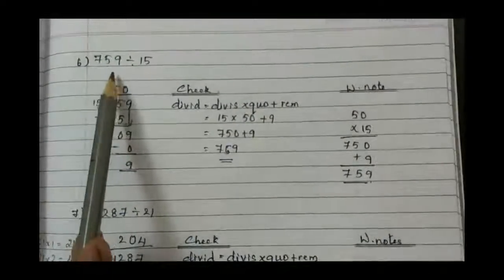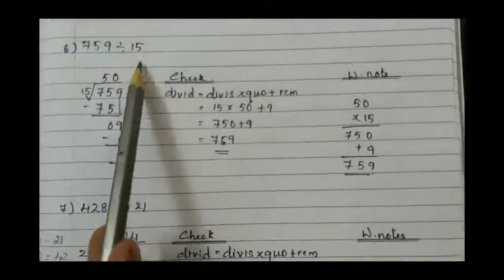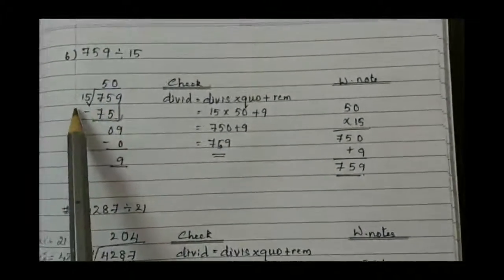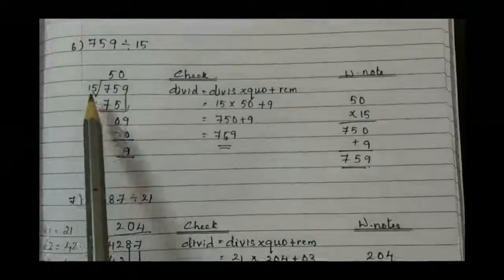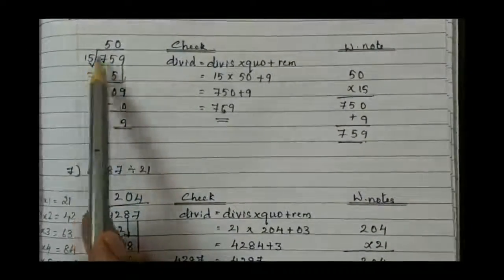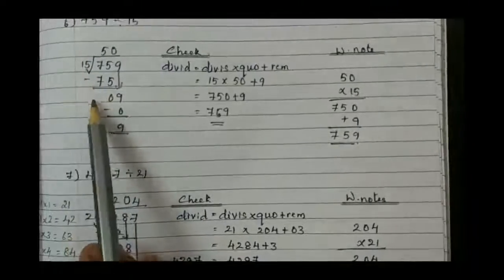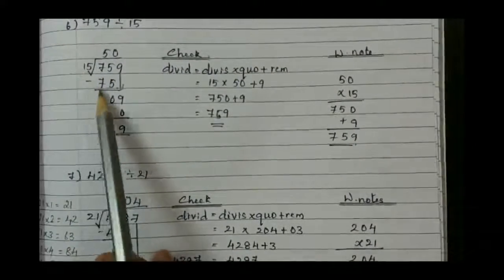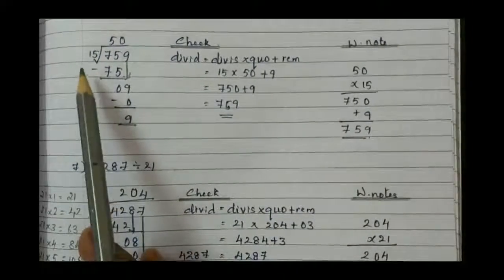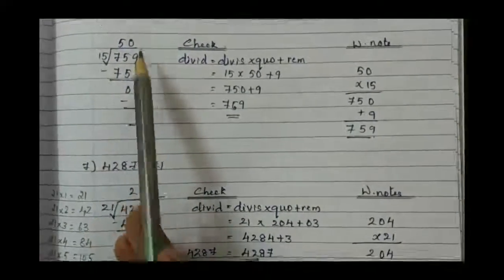Question number 6: 759 divided by 15. We are going to divide 759 by table 15. In table 15, when do we get 75? 15 times 5 is 75. So minus 75, you get 0. Bring 9 down. It's not possible, so go by 0. 15 times 0 is 0. 9 minus 0 gives remainder 9.